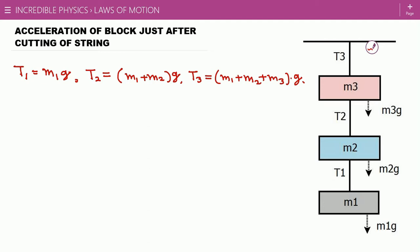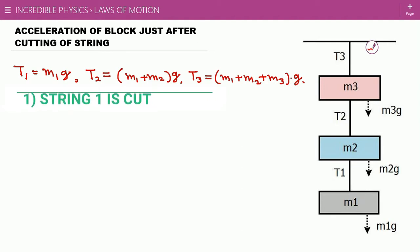Now we consider the first case in which string number one is cut. When we cut string number one, the tension in that string becomes zero instantly, so T1 is zero. Since this string is now cut, m2 will experience only m2g downward and T2 upward, so from the FBD of m2 we can say T2 is now m2g, and T3 will be (m2 + m3)g. These are the new tensions in the strings.